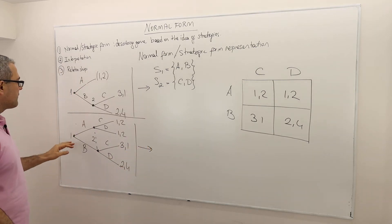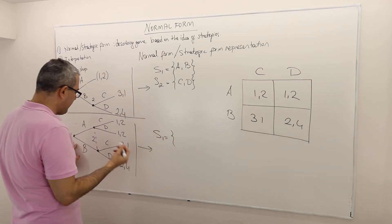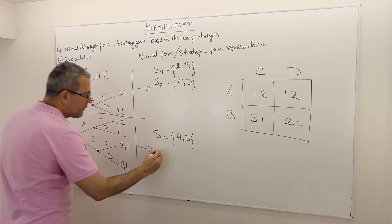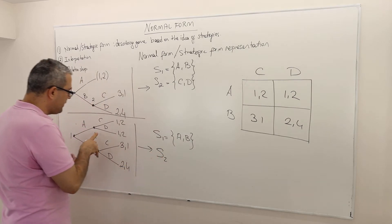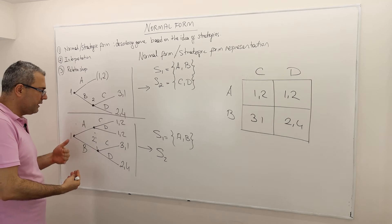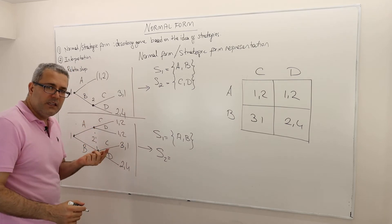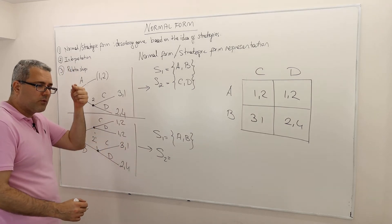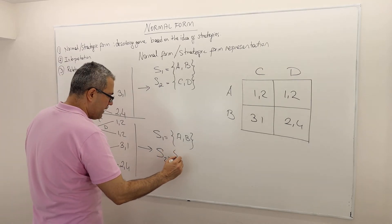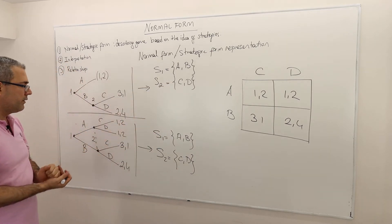Now for the second game — similar but with a key difference. Player one still has one info set, two available actions, so two to the power one — two strategies. Player two has two decision nodes, but both are included in the same info set. Therefore he has one info set with two available actions, giving two to the power one — two strategies.